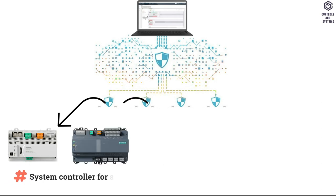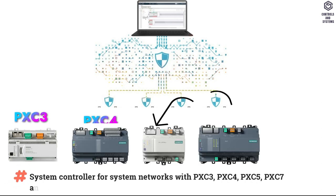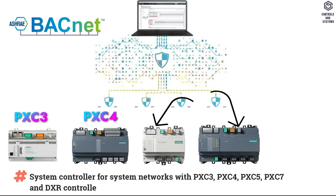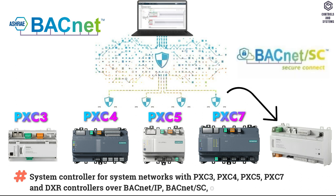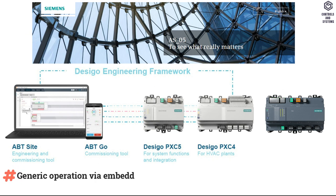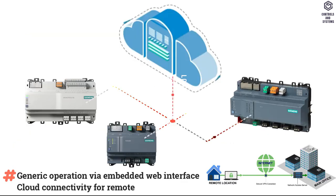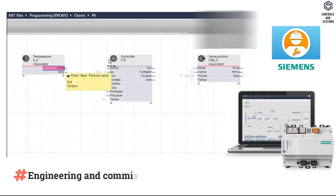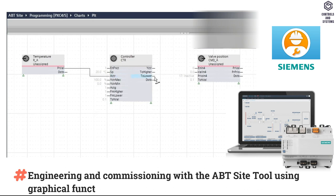The PXC7 acts as a System Controller for system networks with PXC3, PXC4, PXC5, PXC7 and DXR Controllers over BACnet. It supports Generic Operation via an Embedded Web Interface and Cloud Connectivity for Remote Access. Engineering and Commissioning is done with the ABT site tool using Graphical Function Charts.